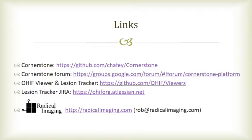In case you want to look a bit more at these things, here are some useful links. You can find out more about the Cornerstone project source code there. The Cornerstone Forum is where you can see what people are thinking about, post questions, and get them answered. The OHIF Viewer and Lesion Tracker also have source code on GitHub — you can download the code and deploy the application yourself. There are sample applications you can run right on the webpage. Our JIRA instance is also publicly available; you can sign up for an account to see what we're doing, see when we need help, or keep track of what's going on.